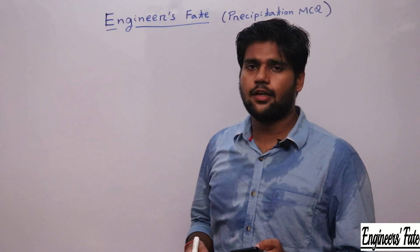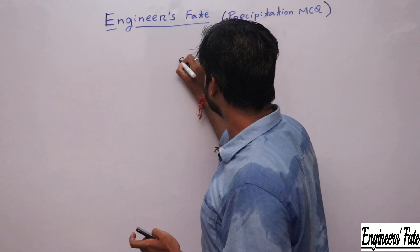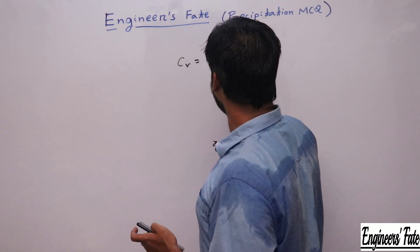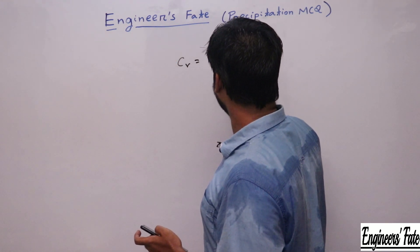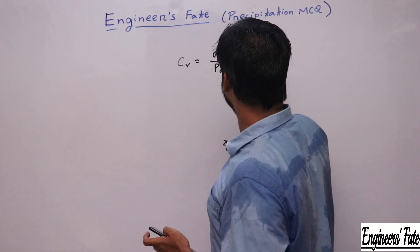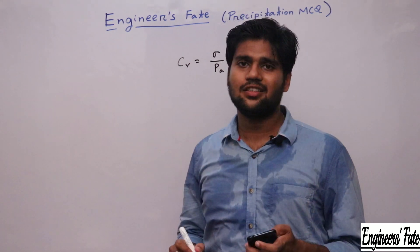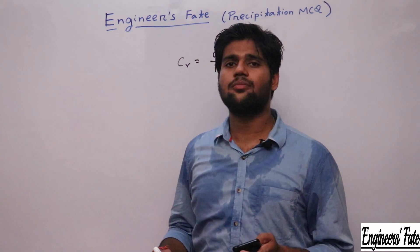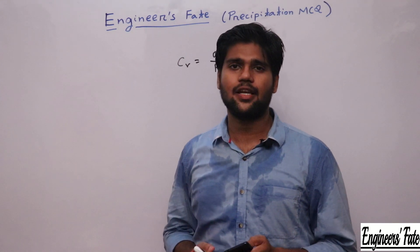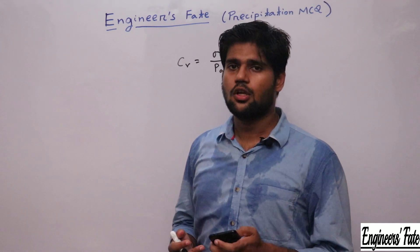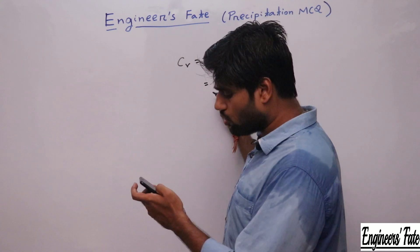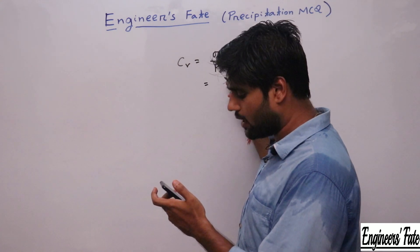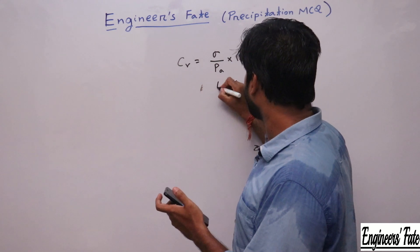The coefficient of variation Cv = (σ / P̄) × 100, where σ is the standard deviation and P̄ is the arithmetic average of mean precipitation values. So the option is standard deviation divided by mean, multiplied by 100 — option A.